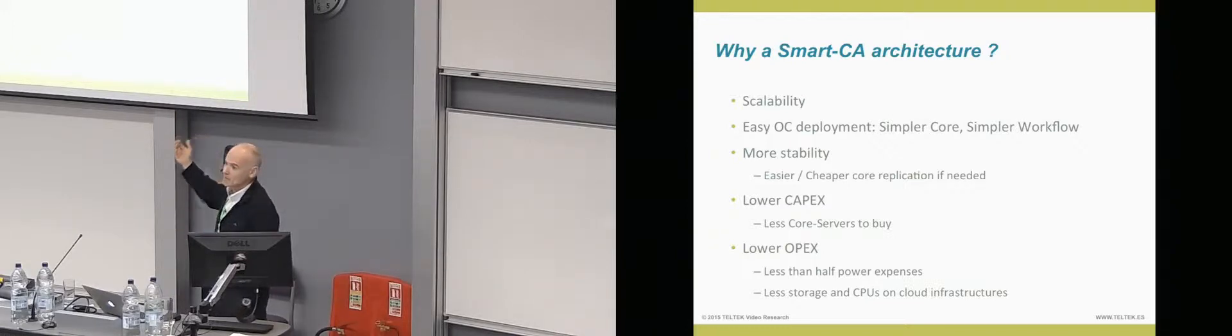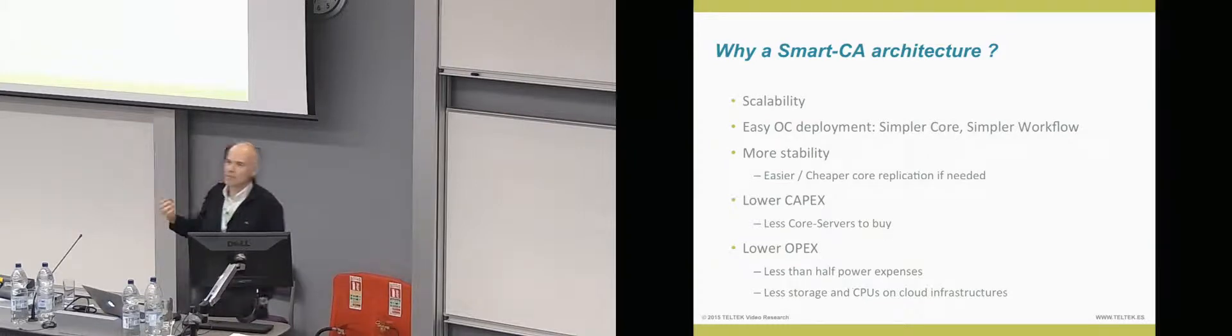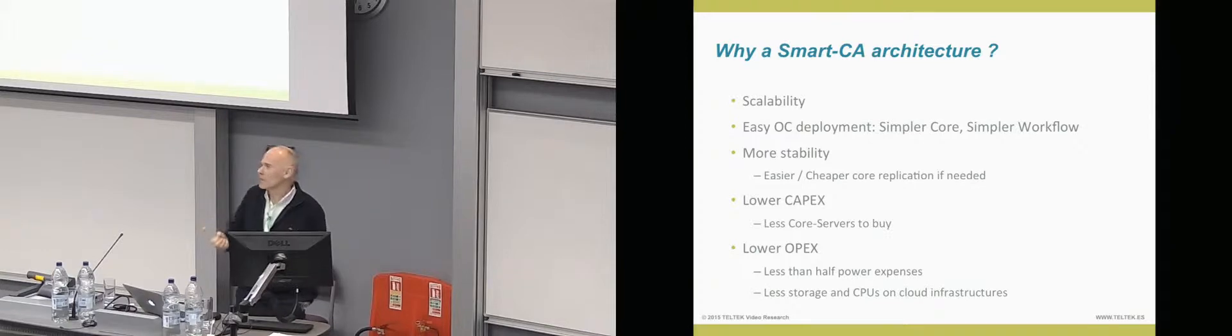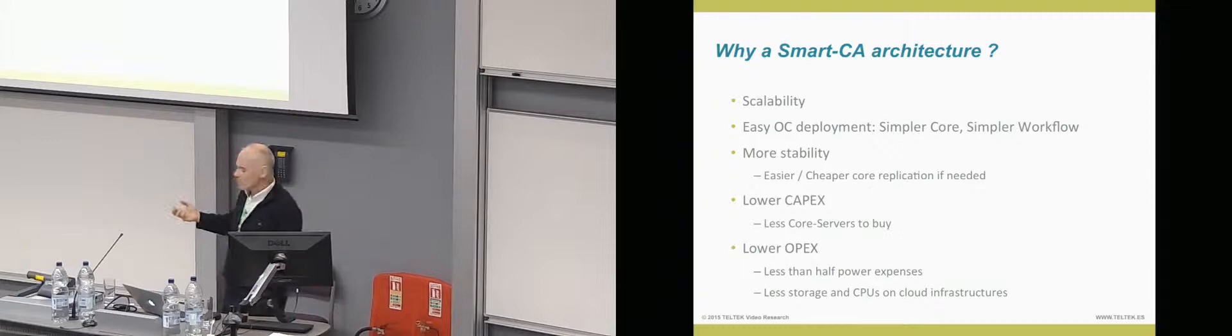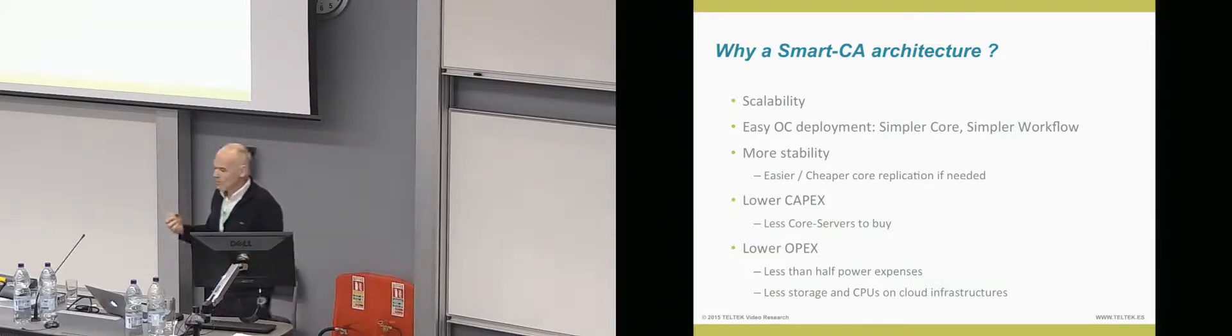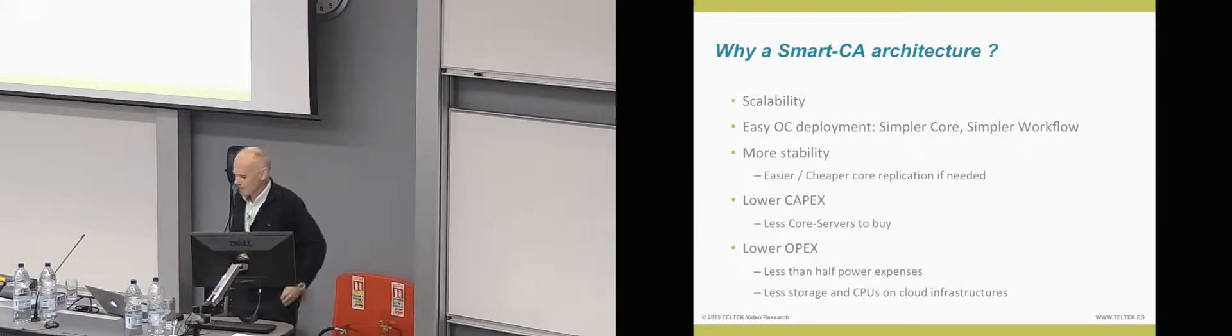Having a capture agent able to deliver an almost ready-to-publish media package to the core, adding more capture agents, you're going to be adding more processing power to your infrastructure. So the core will be almost, you will almost not need to spend more money and to add more servers to that core. So, why this new approach? Why this smart capture agent architecture? Of course, because of scalability, as I said. But also, we realized that it will be also easier to build a Matterhorn deployment if you have a capture agent able to deploy an almost ready media package. The core will be simpler. It will be also more stable because as the core is simpler, you can reduce some parts of the core. And it will be very difficult to have a catastrophic failure in your infrastructure.